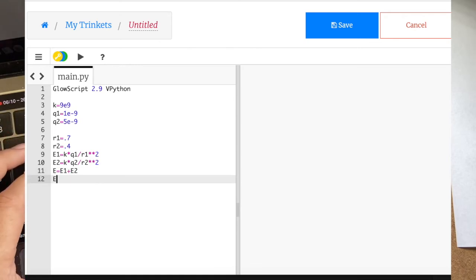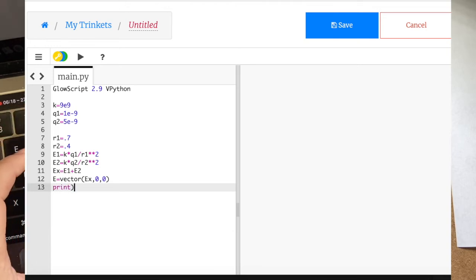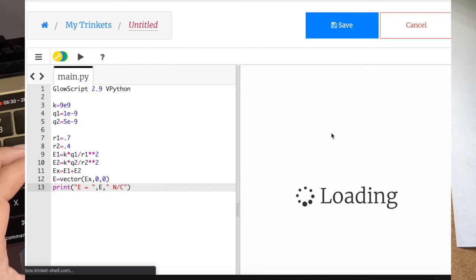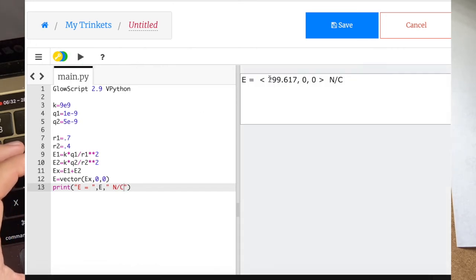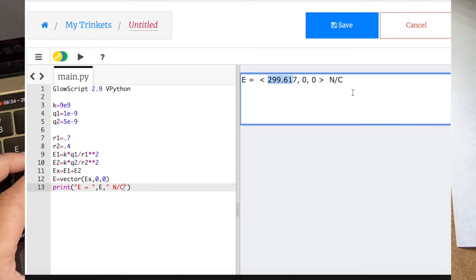And then let's call it EX. And then E is the vector EX, 0, 0. And let's print that out. Oops. Print E, no, E equals E total, and then units newtons per coulomb. And let's run that. So there you go. There's my electric field. It's like 300 newtons per coulomb in the X direction.